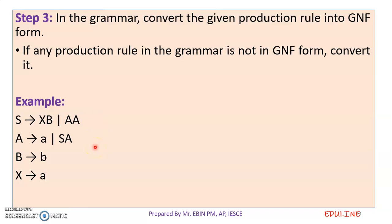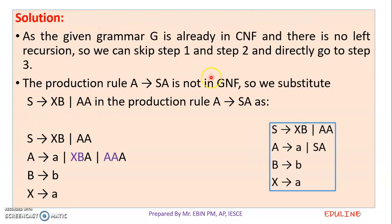So this is not left recursion. Now, if we have a grammar, we have a normal formula. Then this is not left recursion. Now we have two conditions that are OK. So in the first two conditions, we have OK. Now what we have to do is the third condition — we have to consider the next production rules.